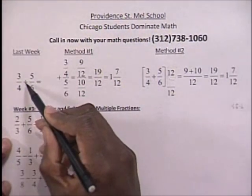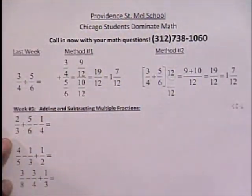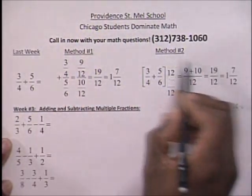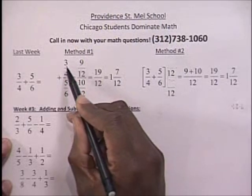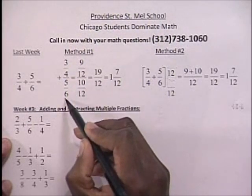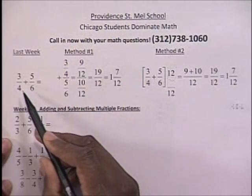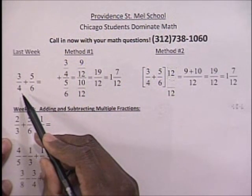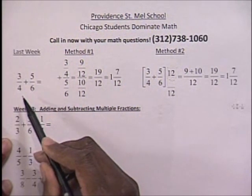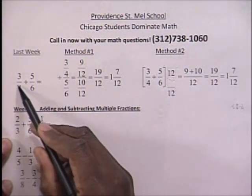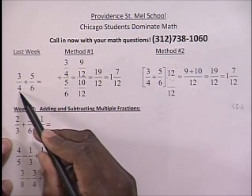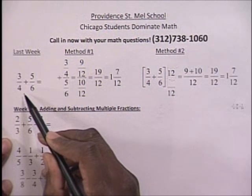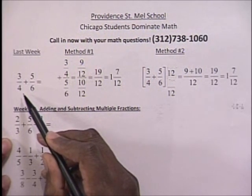Last week we did the problem 3 fourths plus 5 sixths, and we did this problem in two different ways. The first thing we did was set up this problem vertically. We acknowledged that the most important thing you needed when adding or subtracting fractions was a common denominator. In this case you have a 4 and a 6 and they're not the same.